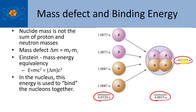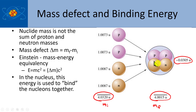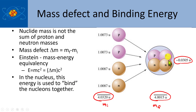The nuclide mass is not the sum of proton and neutron masses. We have a mass defect, which we can calculate as the final mass minus the initial mass. It turns out this energy is related to the strong nuclear force — the energy required to keep these particles together. Protons by themselves have positive charges, so there has to be some force that holds them together. We're going to turn this into something called binding energy: the energy required to bind these particles together.